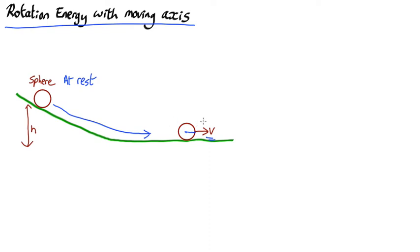So our energy equation is going to be mgh equals half I omega squared plus half mv squared, so energy conservation.